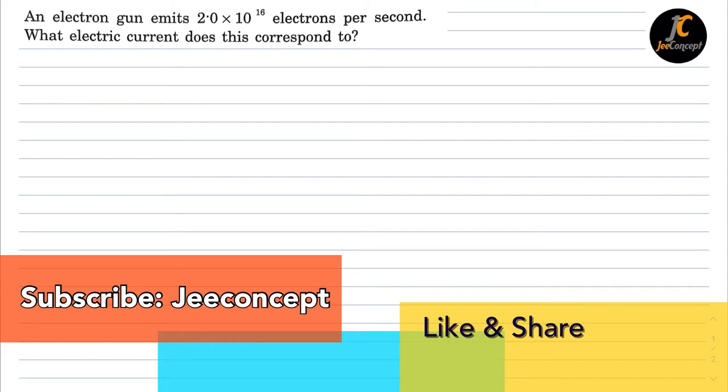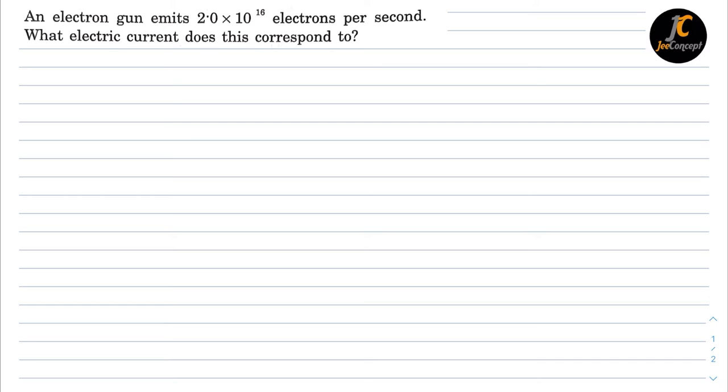Hello everyone, in this problem we will solve this question which says an electron gun emits 2×10^16 electrons per second. What electric current does this correspond to?